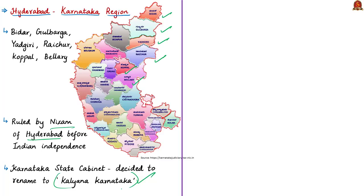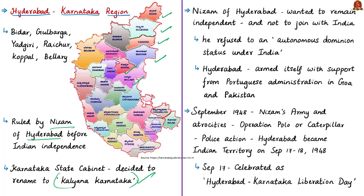The territory of Karnataka became independent from British rule on August 15, 1947, but this did not happen for territories under the Nizam of Hyderabad. The then Nizam, Mir Osman Ali Khan Asaf Jah VII, was not willing to join the Indian Union and declared Hyderabad as an independent nation on August 15, 1947. In June 1948, Mountbatten proposed the 'Heads of Agreement' deal, which would give Hyderabad the status of an autonomous dominion under India. India signed the deal but the Nizam refused, demanding complete independence or dominion status under the British Commonwealth of Nations.